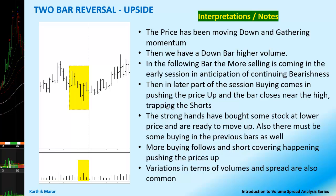Let's look at the interpretation of the 2-bar reversal. The price was moving down and gathering momentum. Then we have a previous down bar on higher volume. In the following bar, more selling comes in the early sessions in anticipation of continuous bearishness. It opens low and may be pushed down further. Then, in the later part of the session, buying comes in, pushing the price up, and the bar closes near the high, trapping the shorts.